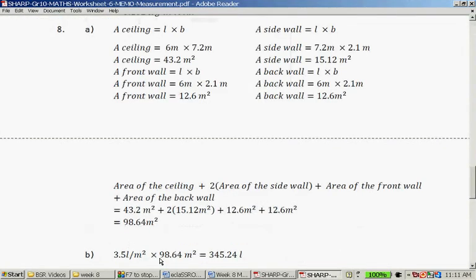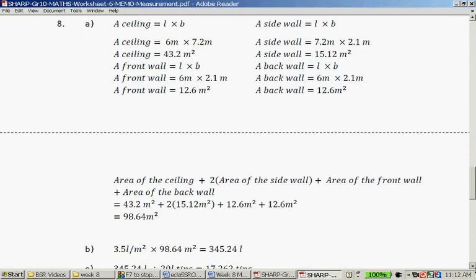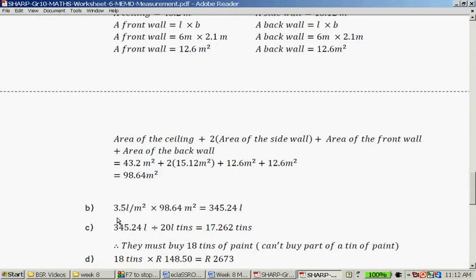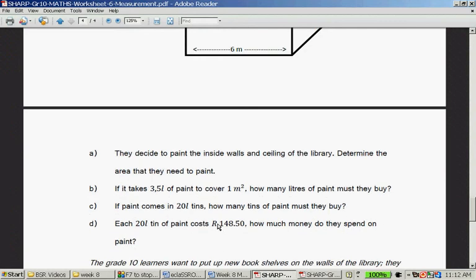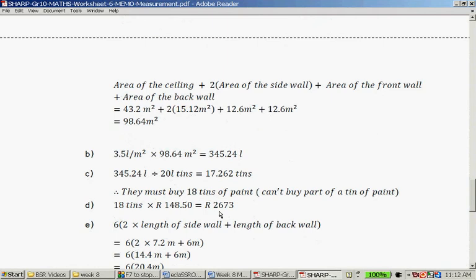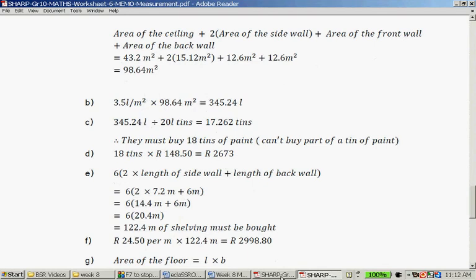If you take 3.5 liters of paint and it covers 1 square meter, how many liters of paint must they buy? So you take the area and you times it by 3.1, and that gives you 345.24 liters. If the paint come in 20 liter tins, how many tins of paint should they buy? So you take the 345.2 and you divide by 20, and it gives you 17.262 tins. So therefore, 17 will not be enough. You won't have enough coverage. So therefore, they must buy 18 tins of paint because you can't buy a quarter of a tin. Each 20 liter tin of paint costs 148.50. How much money will they spend on paint? So 18 times 148.5 and that gives you 2,672 rand.